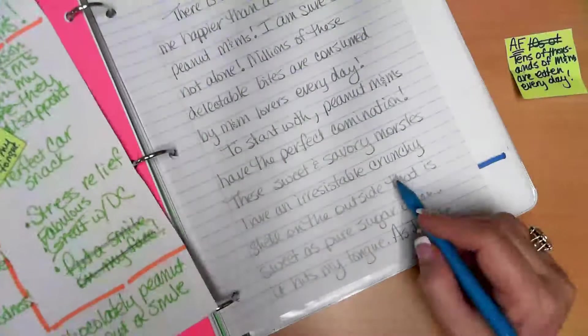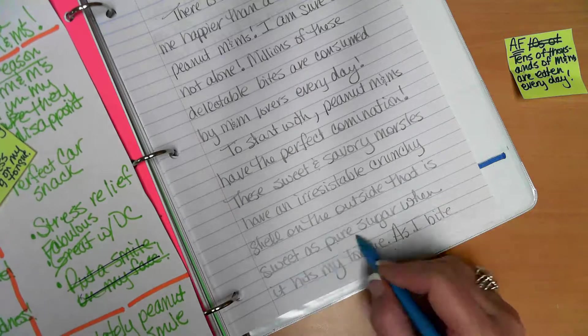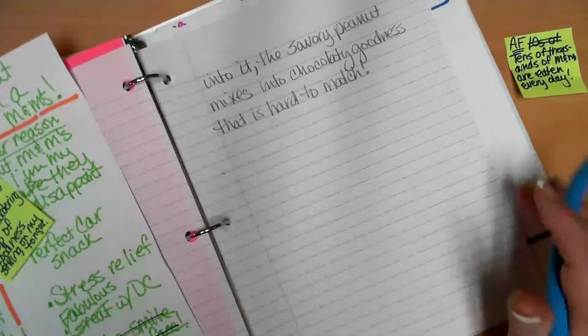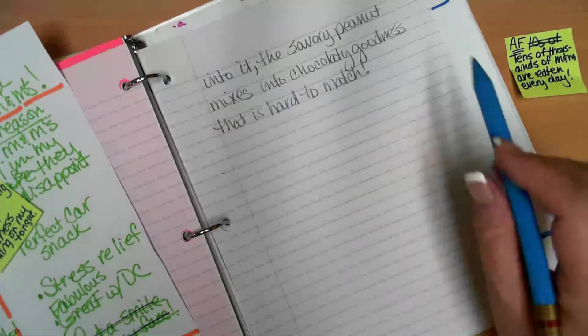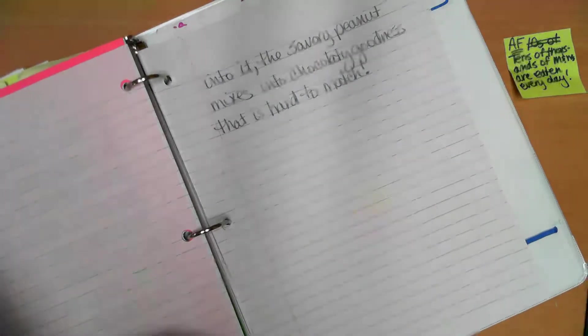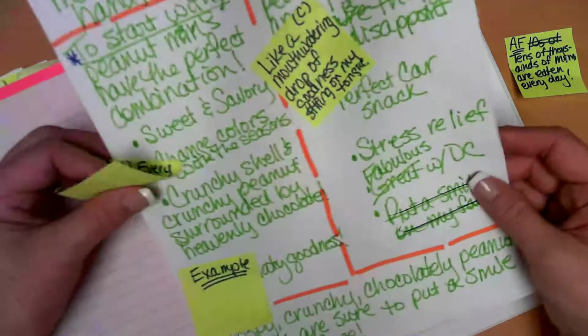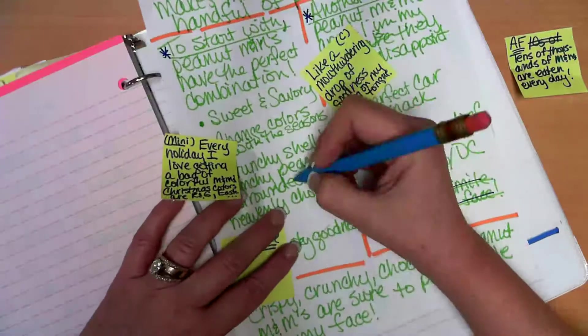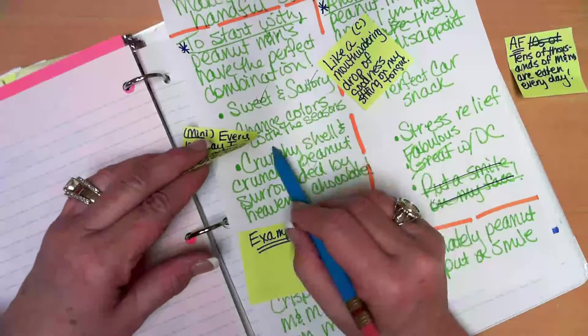So I've got sweet and savory going here, and I decided to jump down to this bullet and start right pulling that in there to support this sweet. So the crunchy shell on the outside that is sweet as pure sugar, so a comparison, when it hits my tongue. As I bite into it, the savory peanut mixes into chocolatey goodness that is hard to match. All right, so now I've read. Now I've got to think about it.